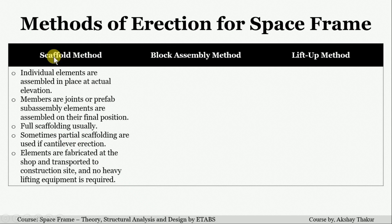In the scaffold method, the structural elements are fabricated at the shop, transported to the construction site, and then assembled at the actual elevation. No heavy lifting equipment is required for this method. For small structures, this method is very economical, whereas for space frames at higher elevations, this method is not suitable from both safety and work efficiency points of view.